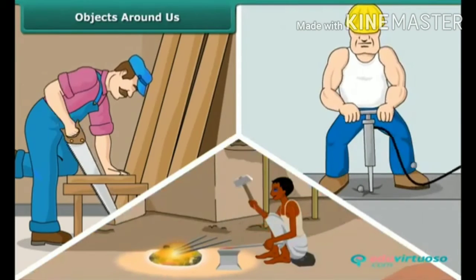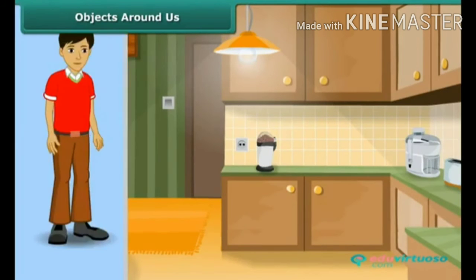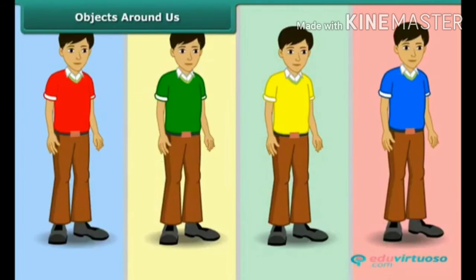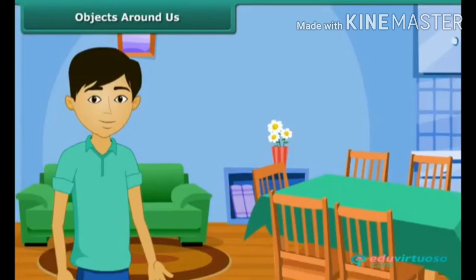That is not all. There is variety in all goods that we use in our life. Clothes that we wear are of different colors like red, green, yellow, and blue. The containers that we use for storage of groceries are of different shapes — conical, cylindrical, cubical, etc. The sofa set and dining table that we use in our homes are made up of wood or plastic.